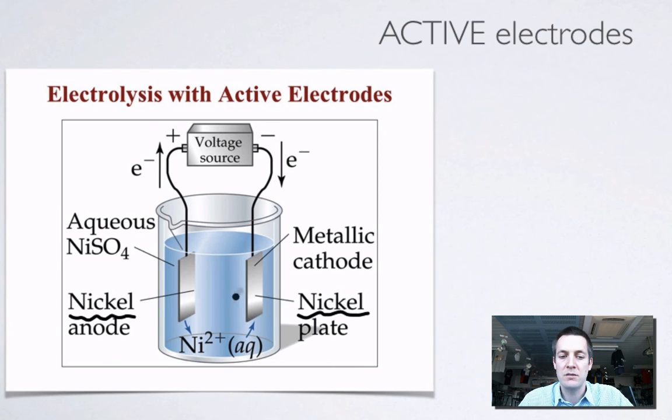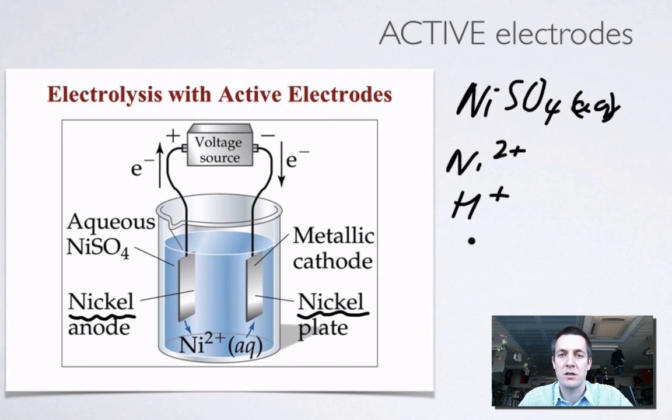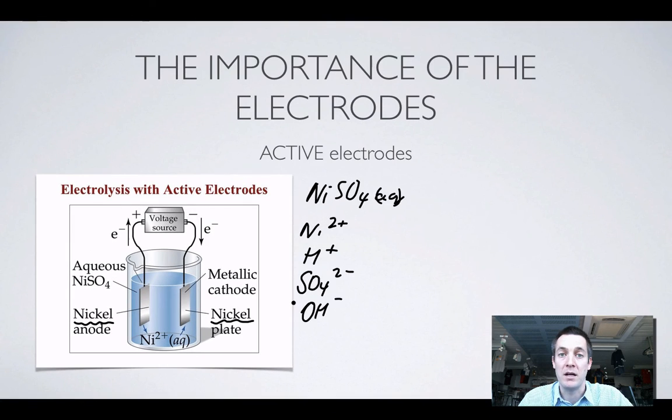Because in this cell we've got nickel sulfate as our electrolyte, not only that but it's aqueous, so we've got the nickel ions in the solution that could come along and gain electrons. We've got H plus ions that could gain electrons, we've got sulfate ions that could lose them, we've got hydroxide ions that could lose them, but we've also got nickel atoms that could turn into nickel ions.